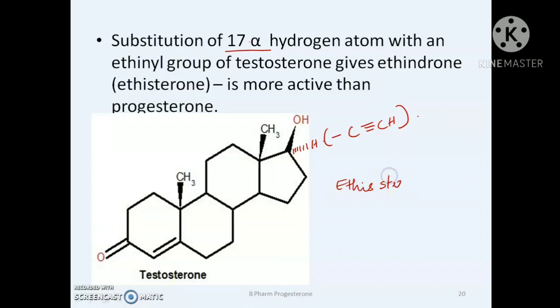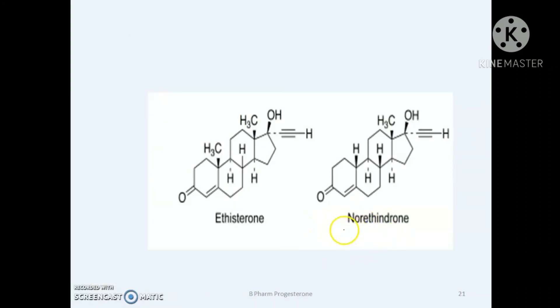Removal of a methyl group from ethisterone gives 19-nor ethisterone derivative, that is norethindron or norethisterone. It is still more active than ethindron.